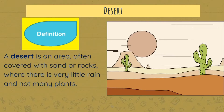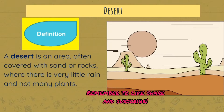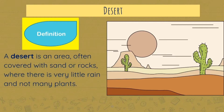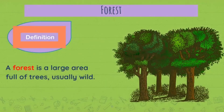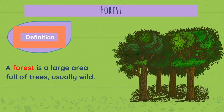First up is the desert. A desert is an area often covered with sand or rocks where there is very little rain and not many plants. Did you know that there is something referred to as an ice desert? Look it up.